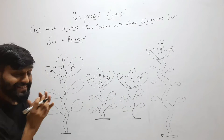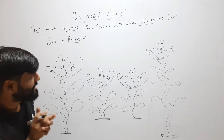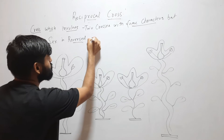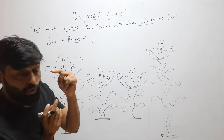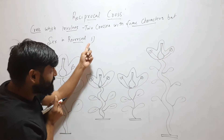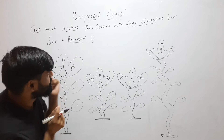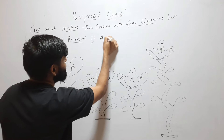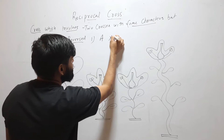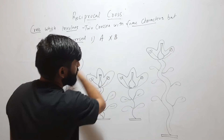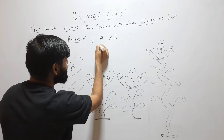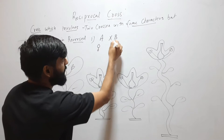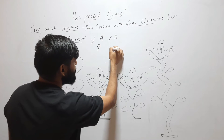Let's understand this with an example. The definition says it involves two crosses, so here I am taking the first cross — it is a cross between A and B, where A is female and B is male.